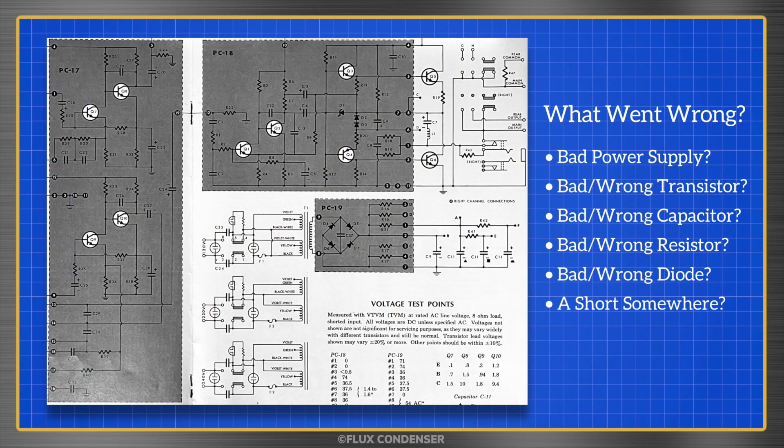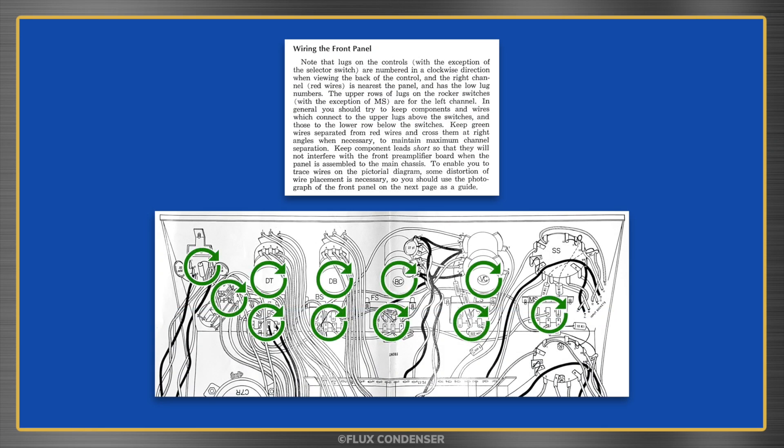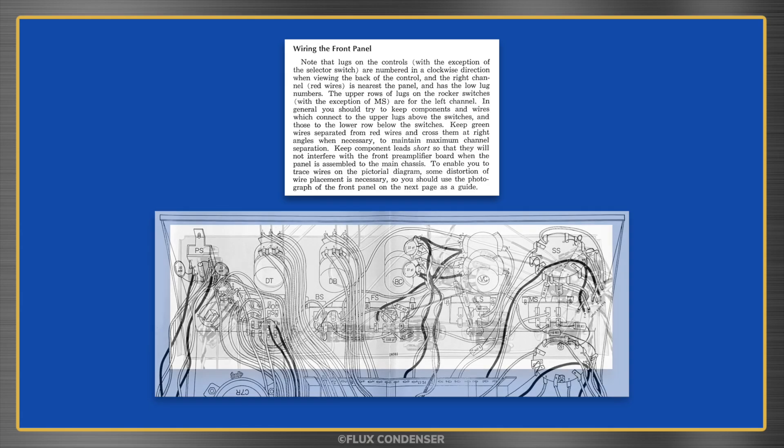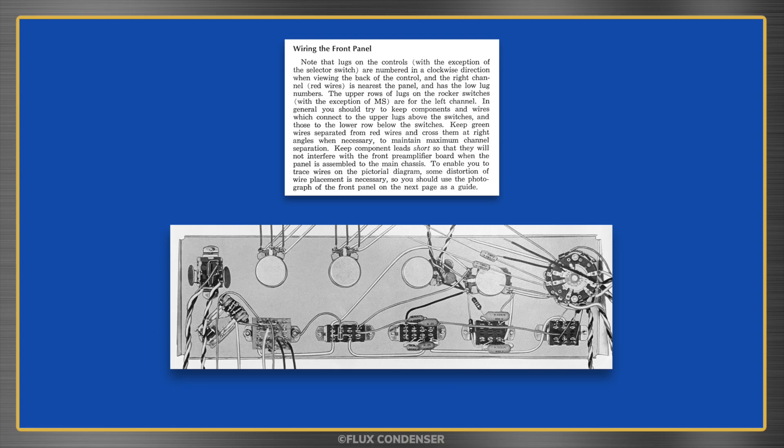Before we begin wiring the front panel, let's hear what Dynaco has to say about the process. Note that lugs on the controls, with the exception of the selector switch, are numbered in a clockwise direction when viewing the back of the control. And the right channel, red wires, is nearest the panel and has the low lug numbers. In general, you should try to keep components and wires which connect to the upper lugs above the switches, and those to the lower row below the switches. Keep green wires separated from red wires and cross them at right angles when necessary, to maintain maximum channel separation. To enable you to trace wires on the pictorial diagram, some distortion of wire placement is necessary, so you should use the photograph of the front panel on the next page as a guide.